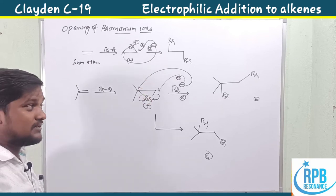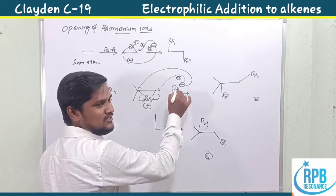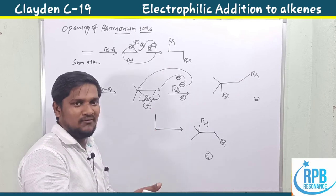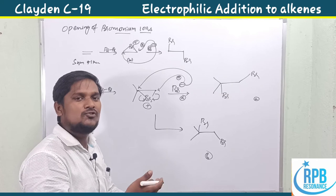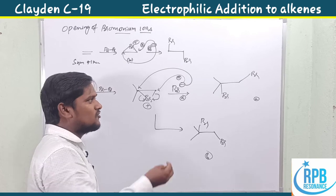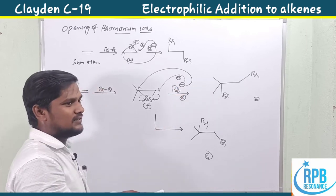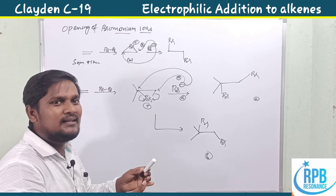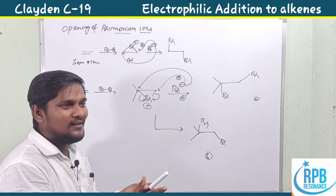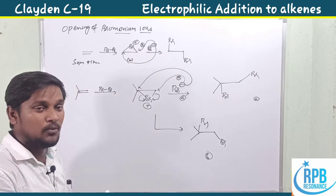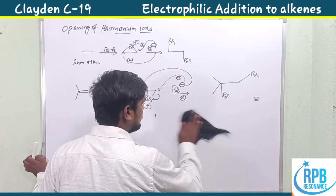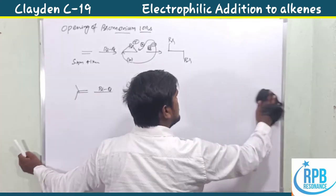However, if you change the nucleophile — for example, in solution we have nucleophiles like methanol, ethanol, or water at higher concentration — varying the nucleophile means the bromonium ion opens in different solvents, giving variations in the opening of the bromonium ion. Let's look at those cases when we change the solvent.